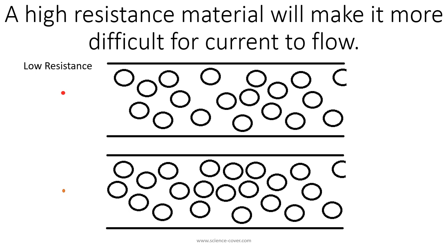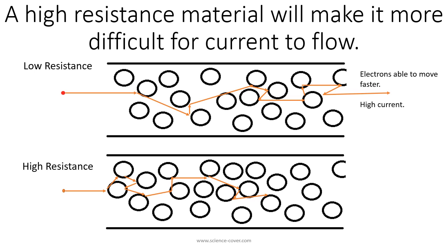A high resistance material is a material which is more difficult for the current to flow. We have two diagrams here: one showing a low resistance material and one showing a high resistance material. You can see that the electron is having greater success traveling through the low resistance material. Although it's still moving through the high resistance material, it's doing so at a slower rate, meaning less current is flowing. For a low resistance, the electron moves fast so we get a high current, but for a high resistance the electrons move slower and we have a lower current.